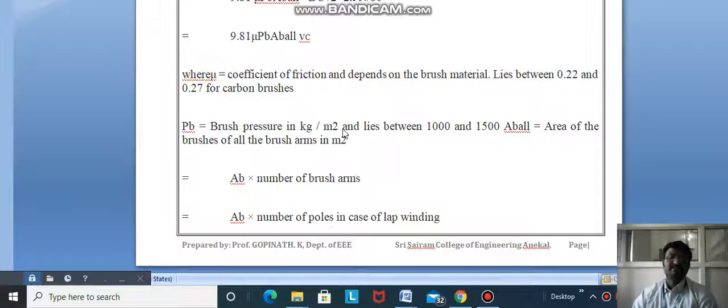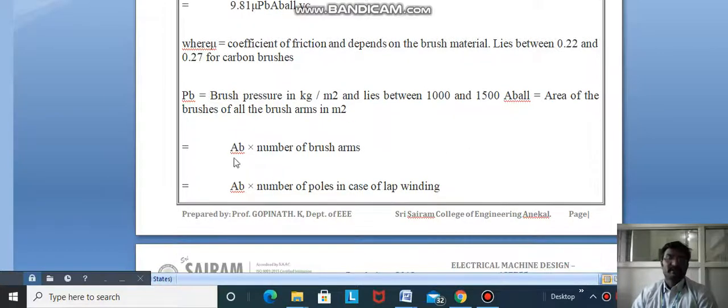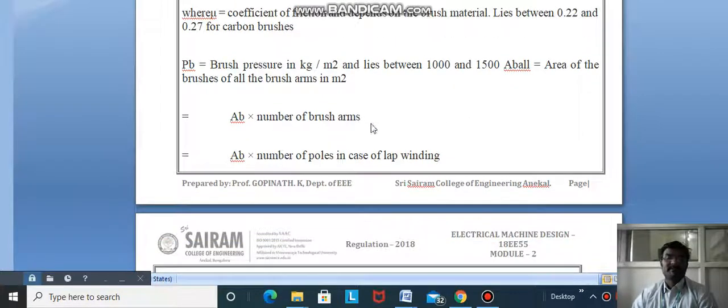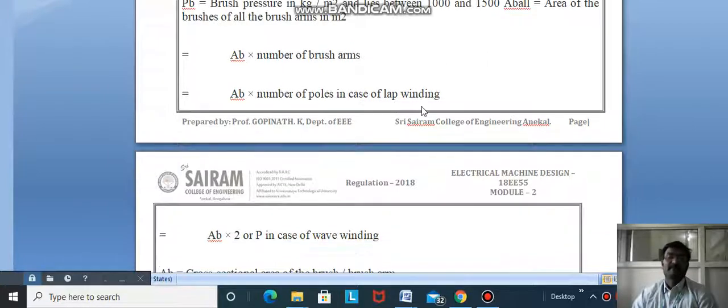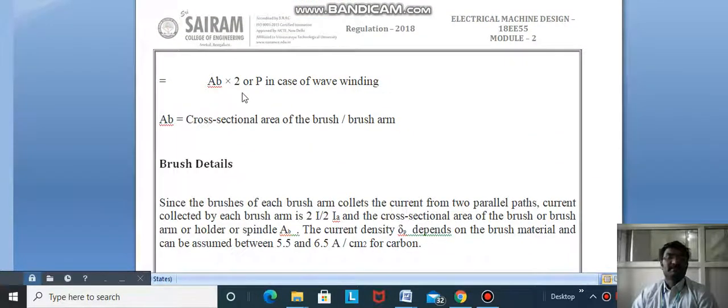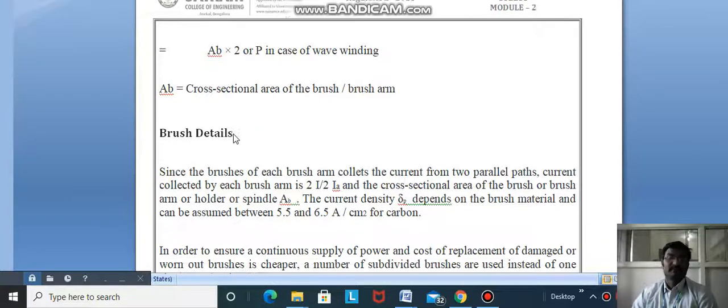μ depends on brush material and lies between 0.22 and 0.27 for carbon brushes. Pb is brush pressure in kg per m² and lies between 1000 and 1500. Ab is area of brush arm in m², times number of brush arms: 2P for lap winding, 2 for wave winding.